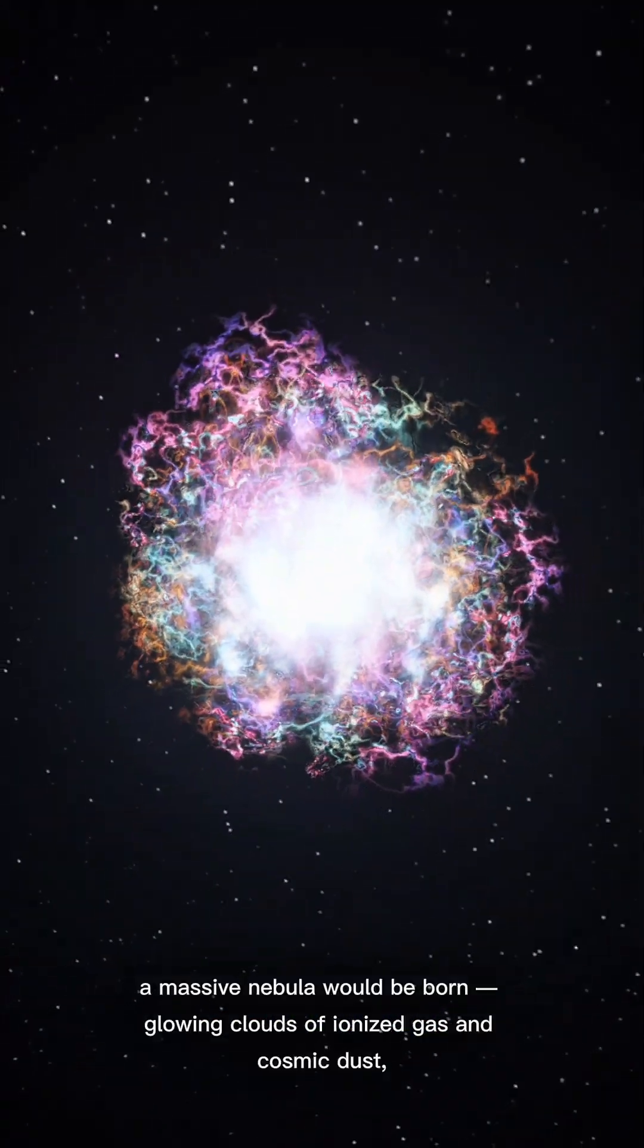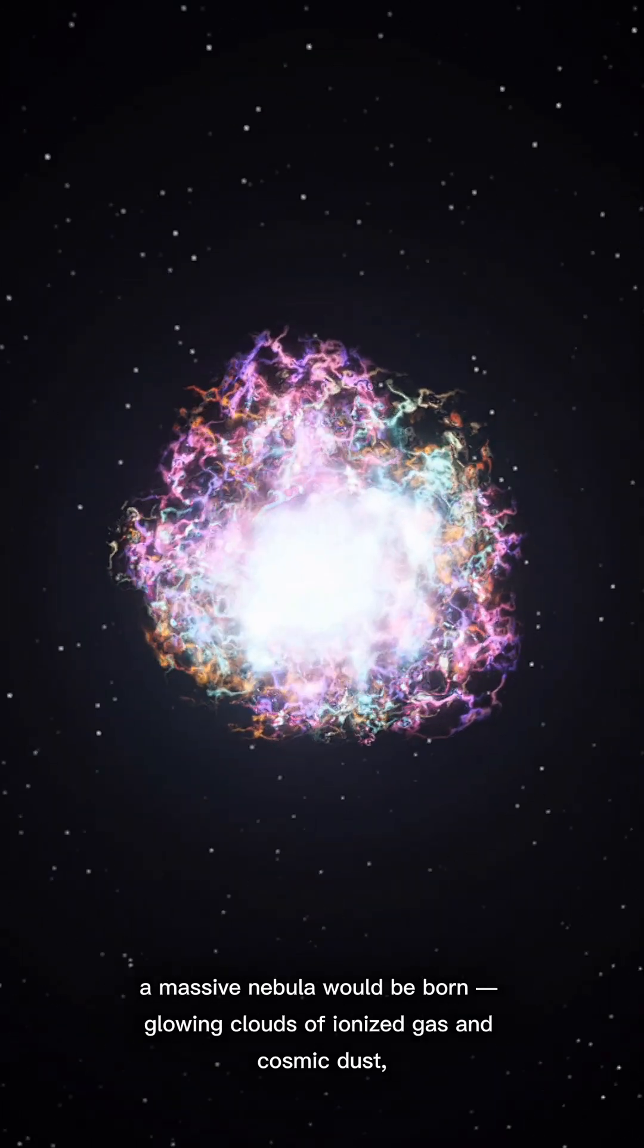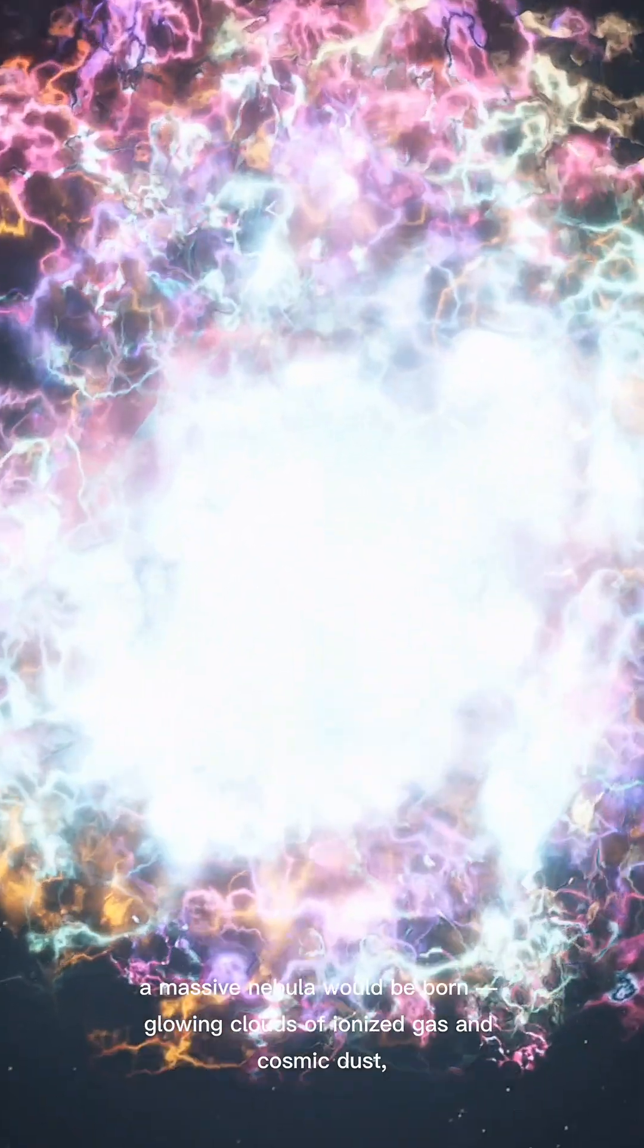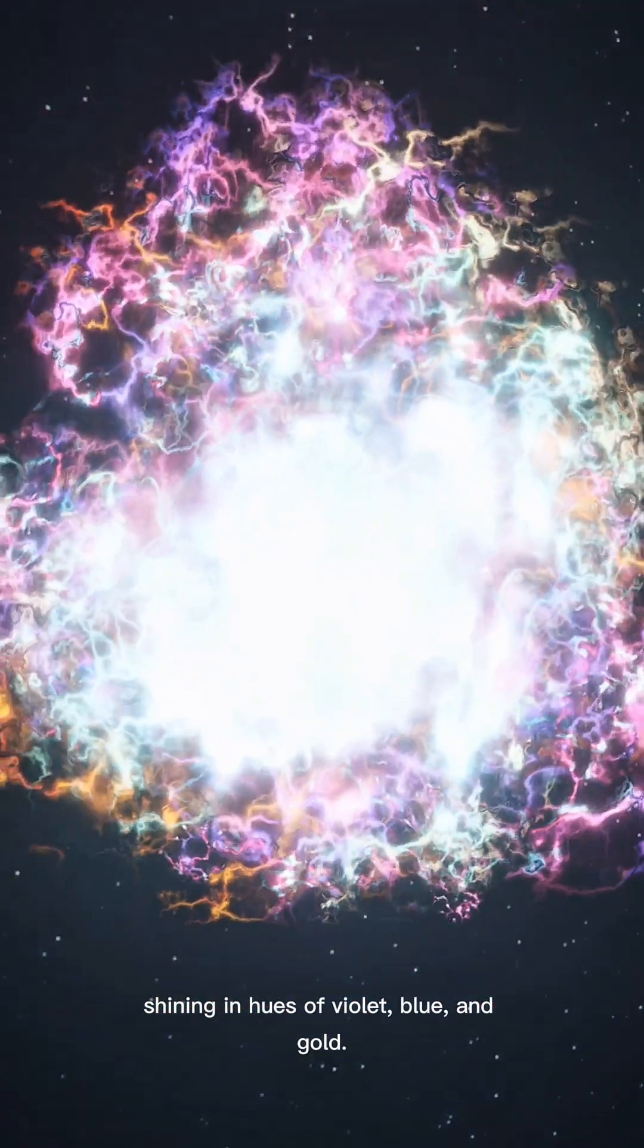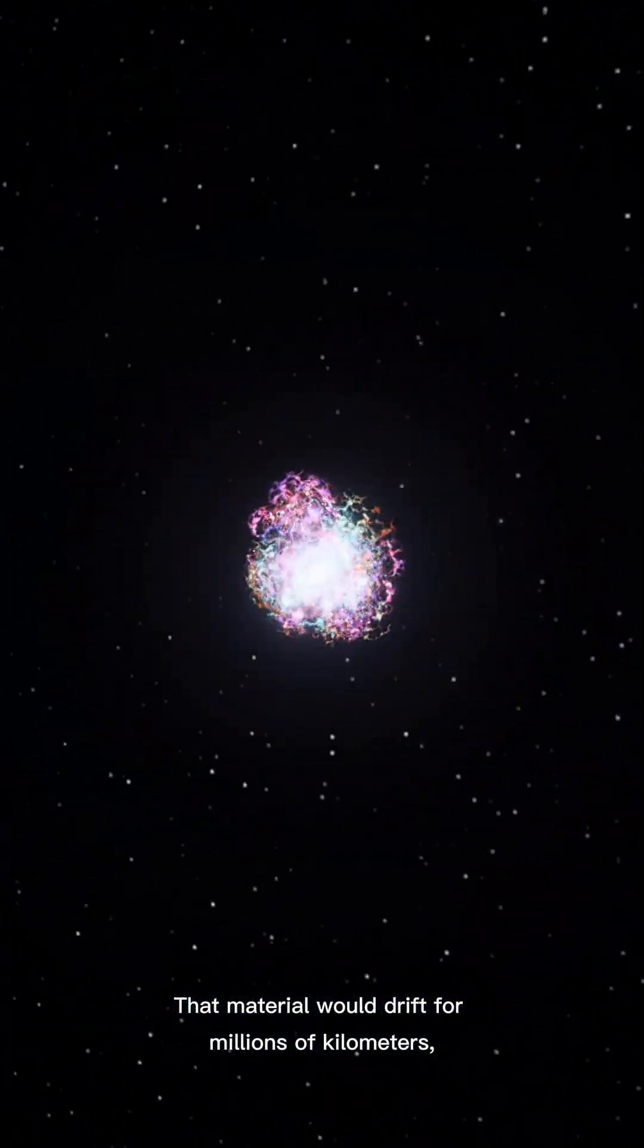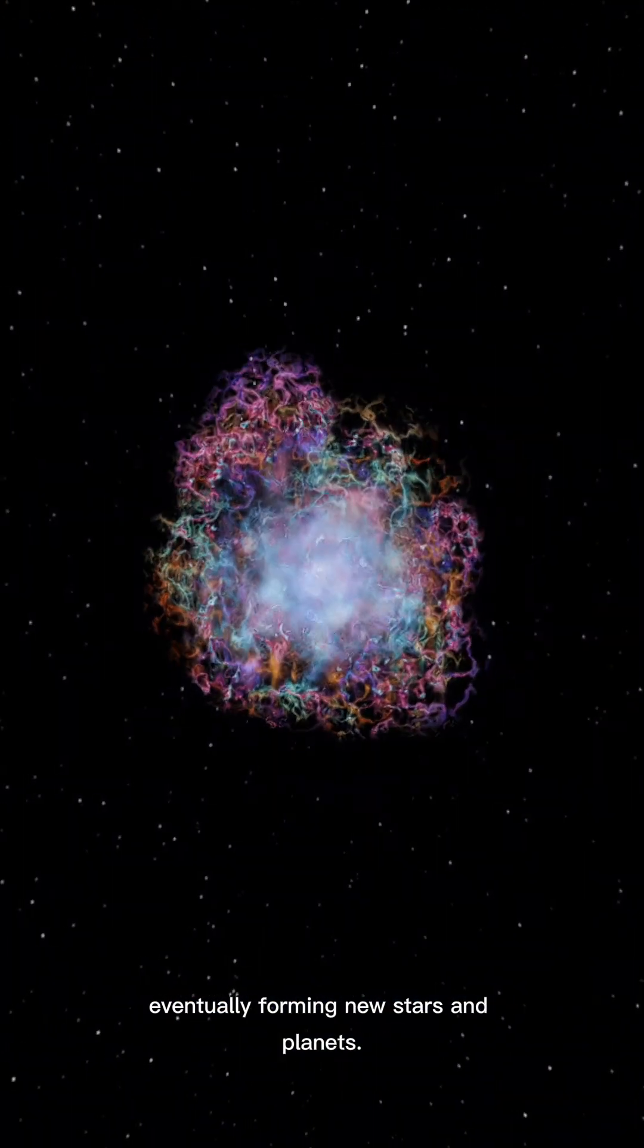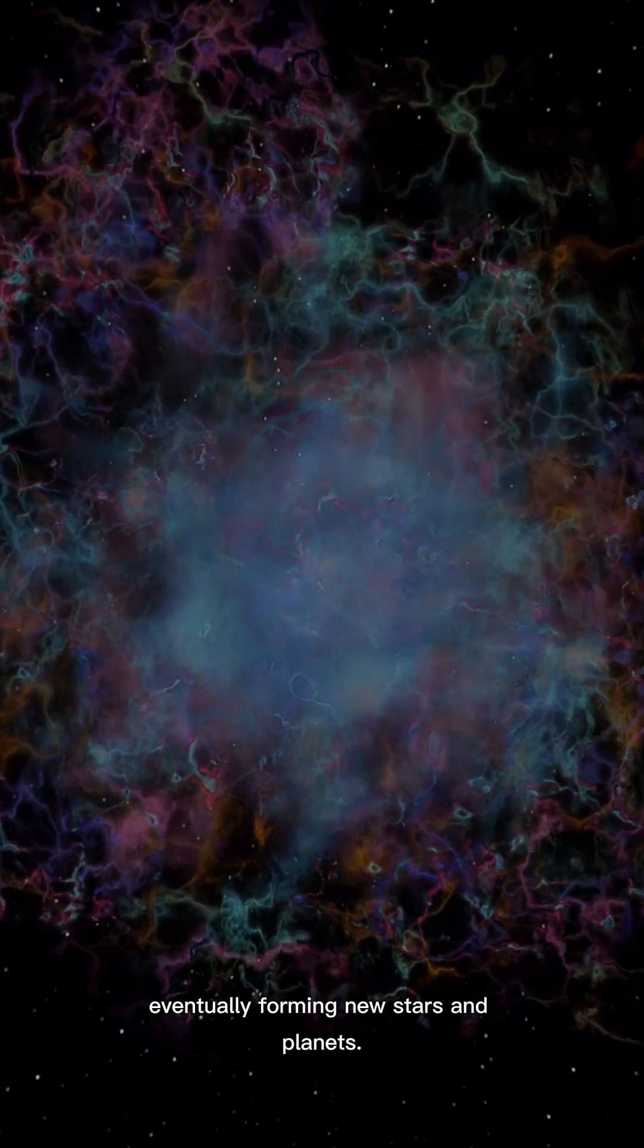From the chaos, a massive nebula would be born—glowing clouds of ionized gas and cosmic dust, shining in hues of violet, blue, and gold. That material would drift for millions of kilometers, eventually forming new stars and planets.